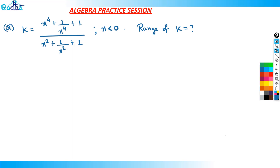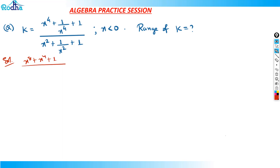Let's solve it. We will try to factorize or simplify it. I will write x⁸ + x⁴ + 1 upon x⁴ + x² + 1, and this will be multiplied by x² upon x⁴.